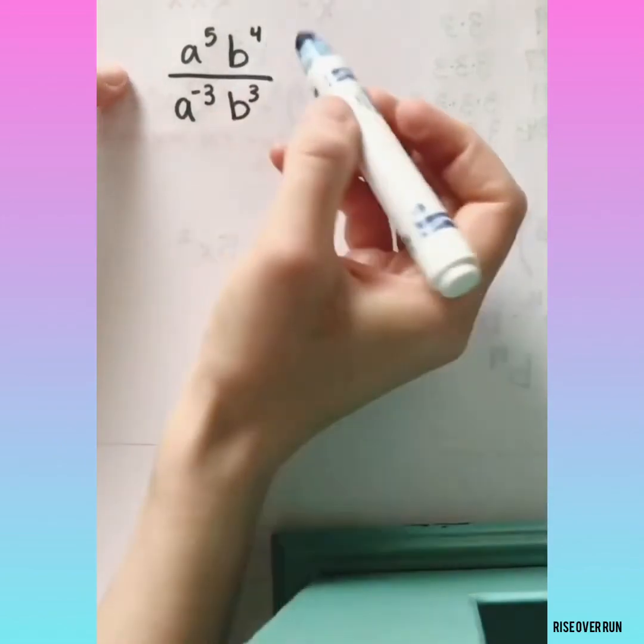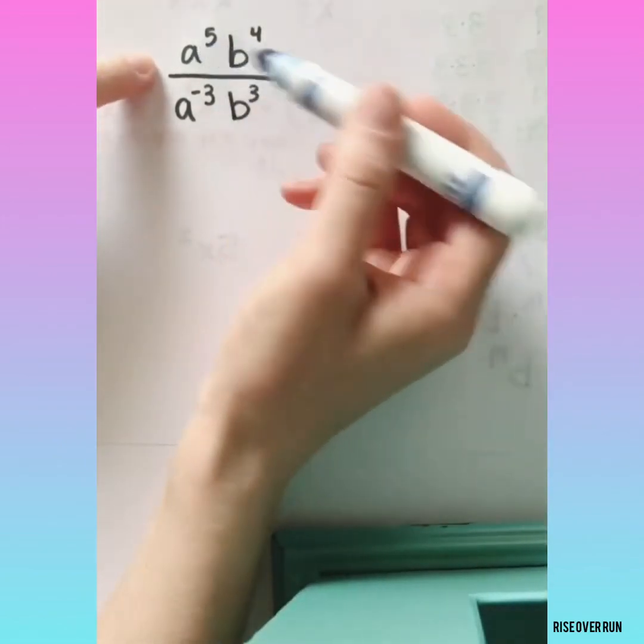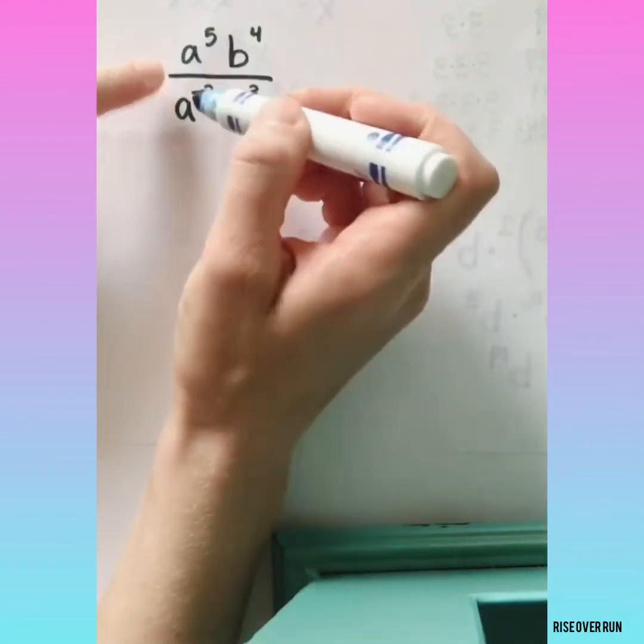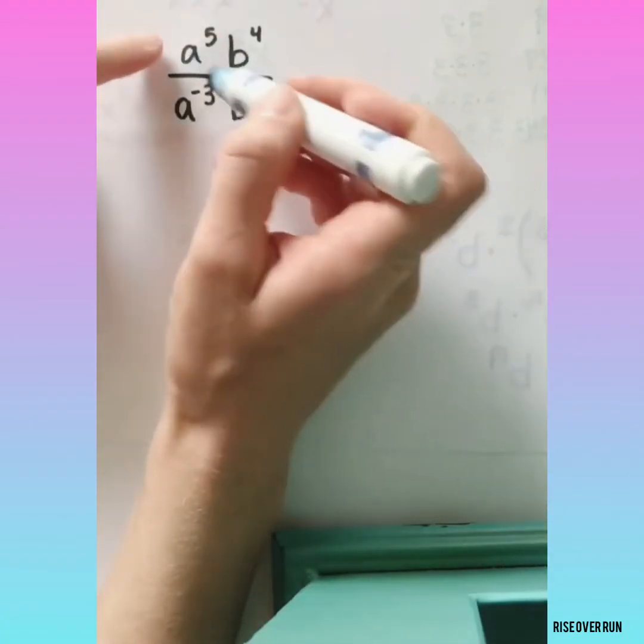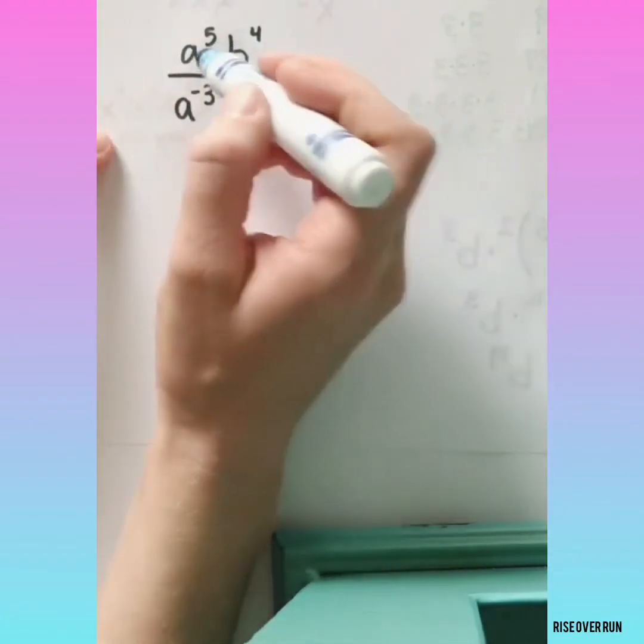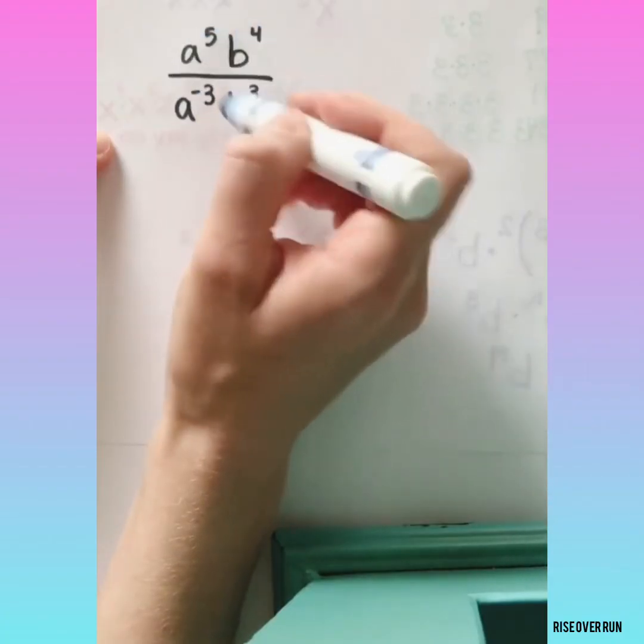Let's look at this expression. First of all, remember that exponent rules only apply if the bases match. We can't combine a's with b's, but we can simplify the a's and the b's.